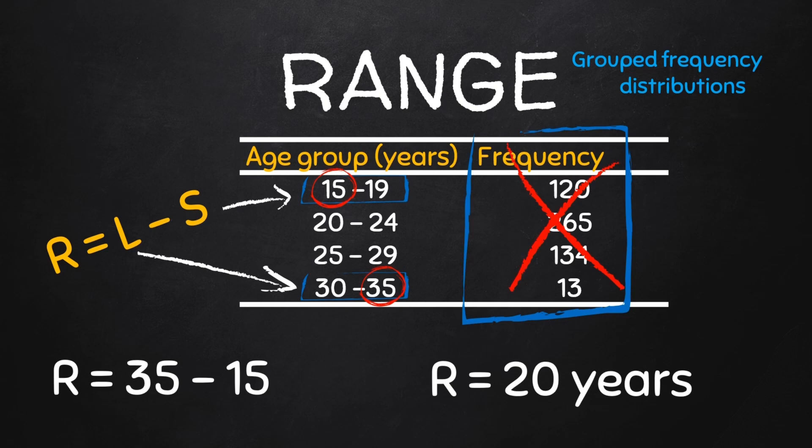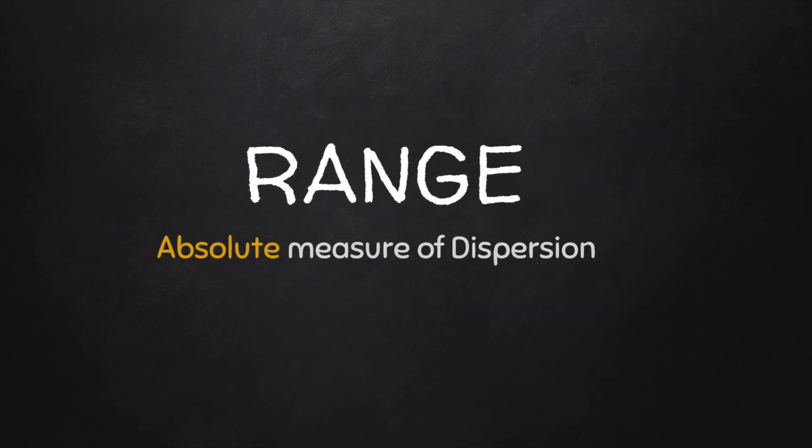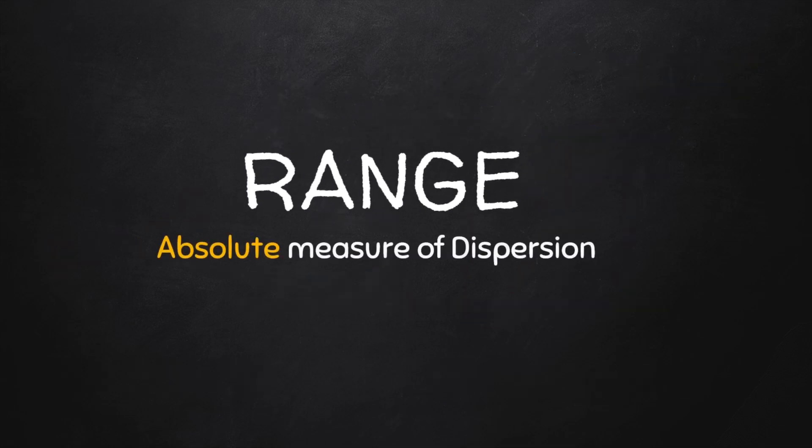Now one thing that is worthy of note about the range is that it's an absolute measure of dispersion. When we say an absolute measure, this means that it is in the unit of the variable that was measured in the data set.